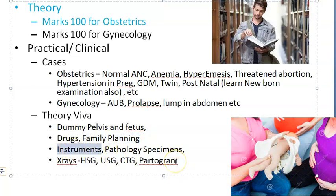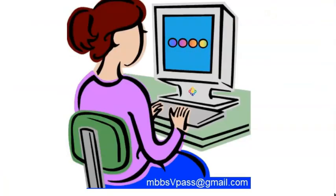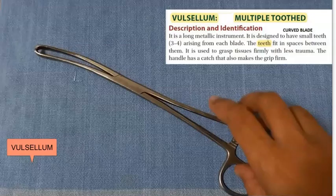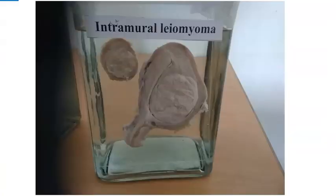For instruments, they can ask you the myoma screw and the Woolsalim. Look at the Woolsalim - it is curved here, unlike the Allis forceps which is slightly curved differently. That is what you should observe. For pathology specimens, they can keep a specimen of a uterus, such as a uterus with leiomyoma showing an intramural leiomyoma, and ask you to describe it.